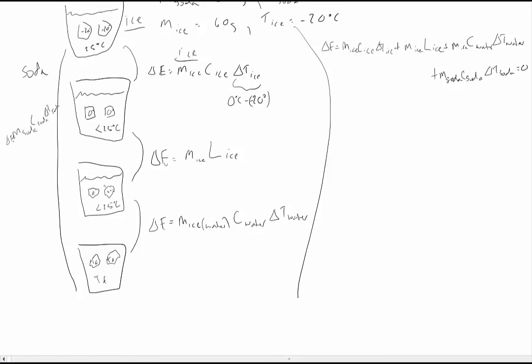One last thing to address is the sign of the M_ice × L_ice term. Think about it this way: for the temperature term, delta E is positive whenever the final temperature is greater than the initial temperature — i.e., when it's heating up and gaining energy. The same logic applies to the latent heat: as ice goes from frozen to melted, it's gaining energy, so you get a positive M × L_ice. If this were freezing instead of melting, you would get minus M_ice × L_ice — you just switch the sign when it goes in the opposite direction.